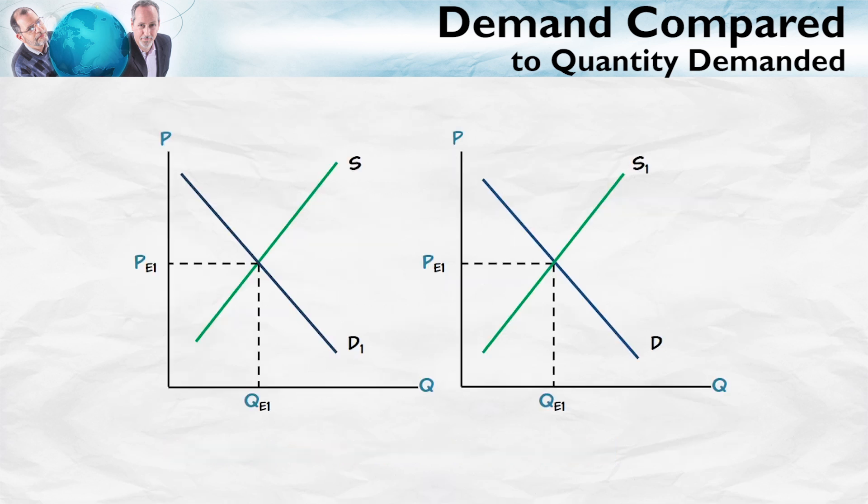Begin on the left with a change in demand. In this case, an increase in demand. The increase in demand shifts the entire demand curve to the right or up, and leads, as we know, to a higher price and quantity exchanged. No problem.